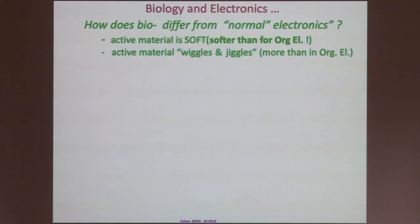So can you have these lively systems and electronics? We have to look at biology and electronics and realize that it will differ from normal electronics. And more so than what we may be familiar with is molecular electronics. And that is, if the active material is soft, and it's softer than the materials used for organic electronics. The materials used for organic electronics are sticks. They're conjugated. They're rather rigid.